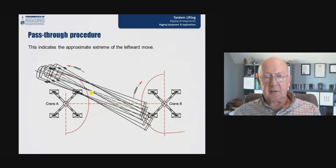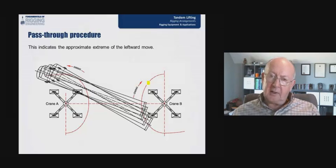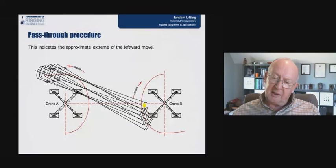This is about the approximate extreme of the leftward move. Now you can pass the tail completely around crane B, along this path. You can start to push the radius out, and you can let the head come back again, on crane A.